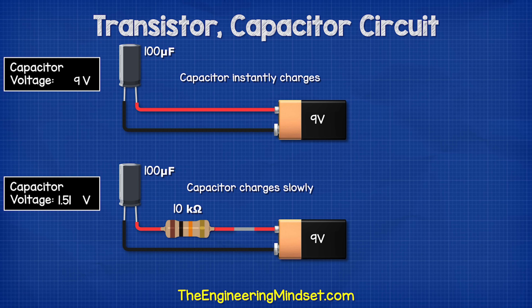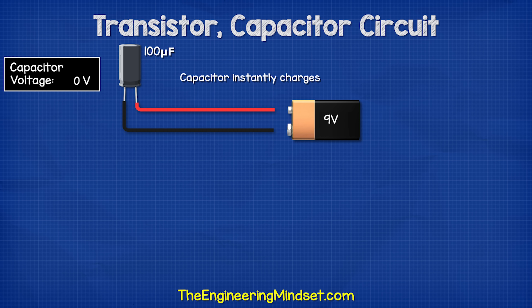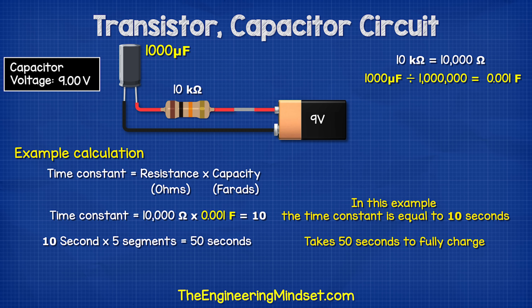We can slow down the charging and discharging time of the capacitor by connecting it to a resistor. These resistors limit the current, which means they limit how many electrons can flow through the wire and therefore into or out of the capacitor at a certain amount of time.